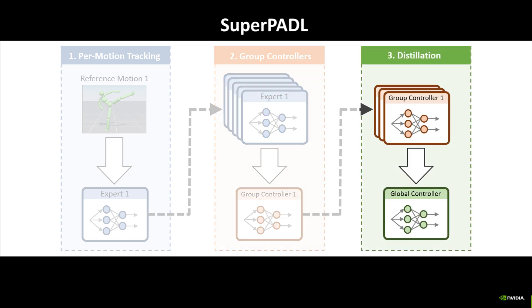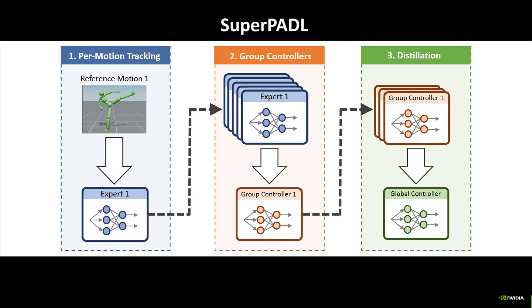Lastly, we distill together all of the controllers to train a single global text-conditioned controller. In each stage, we progressively produce more general-purpose and capable models.